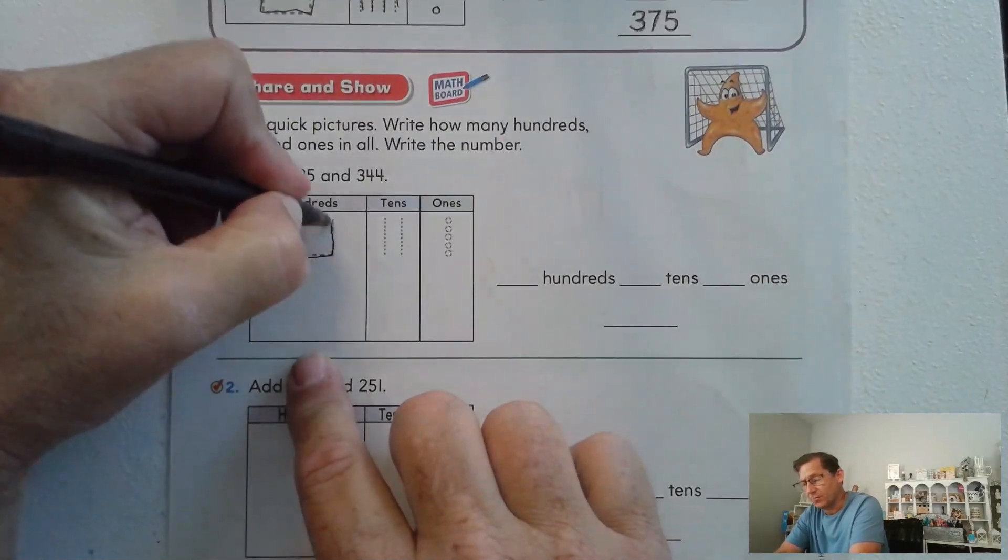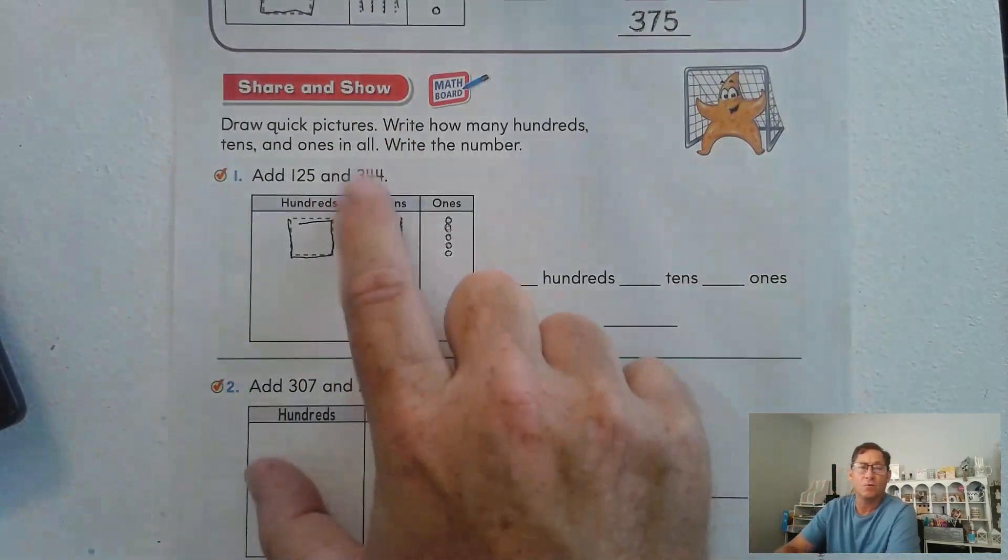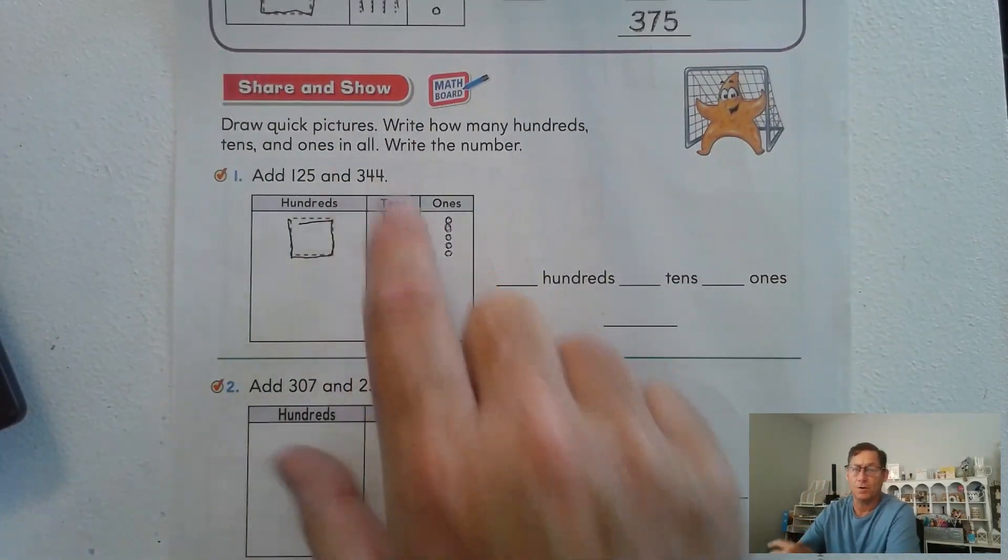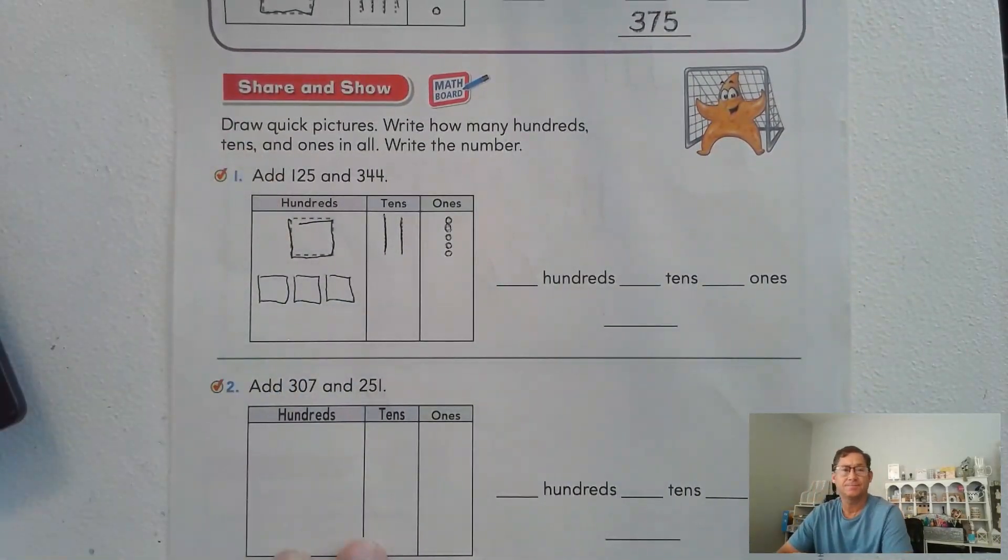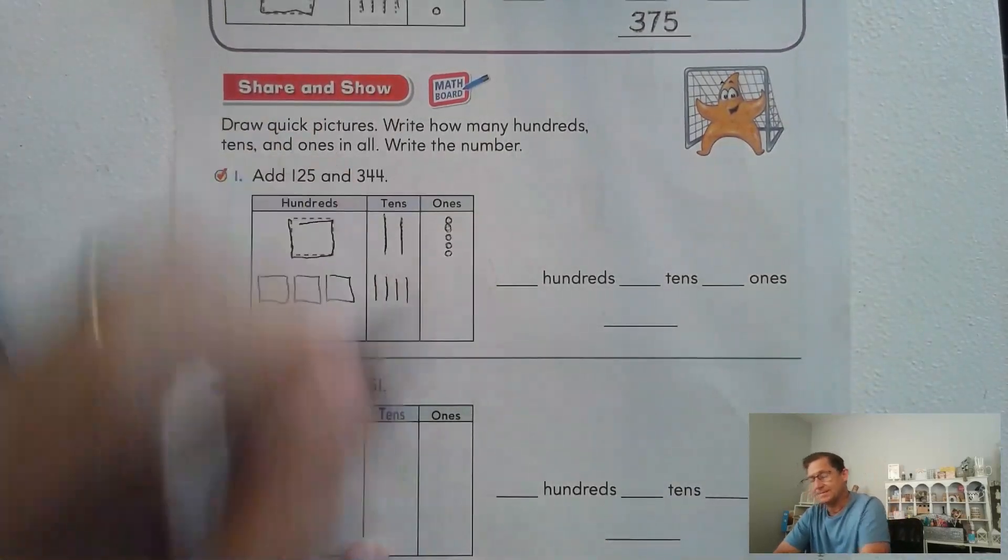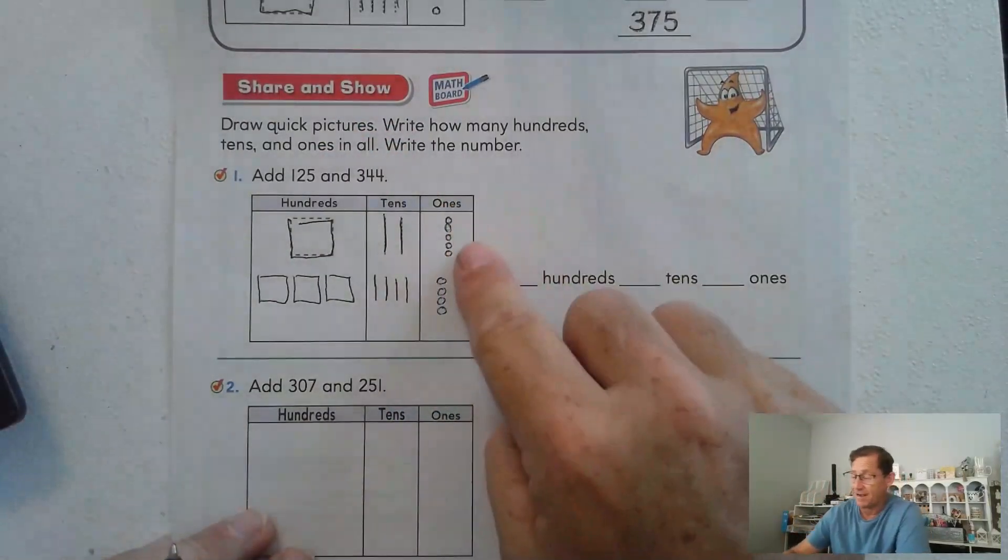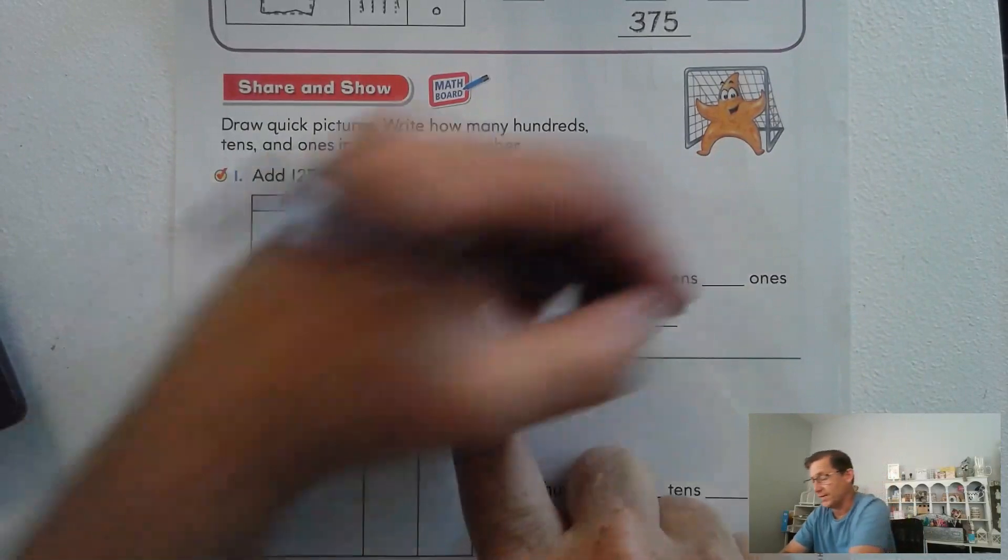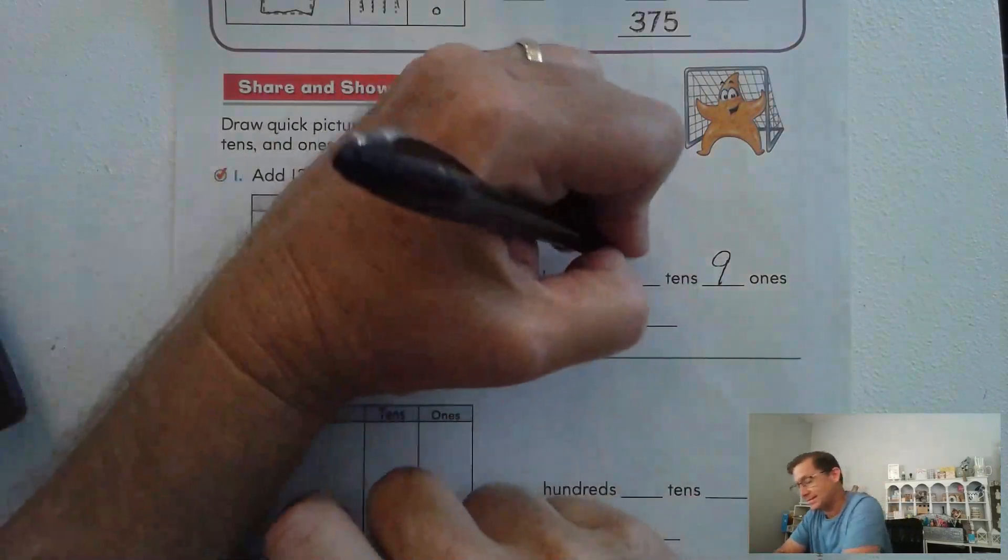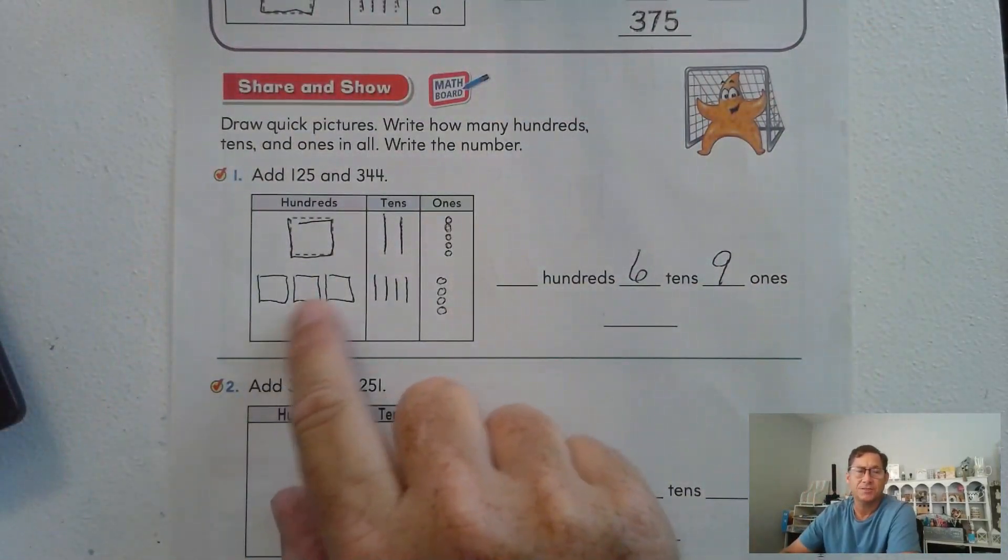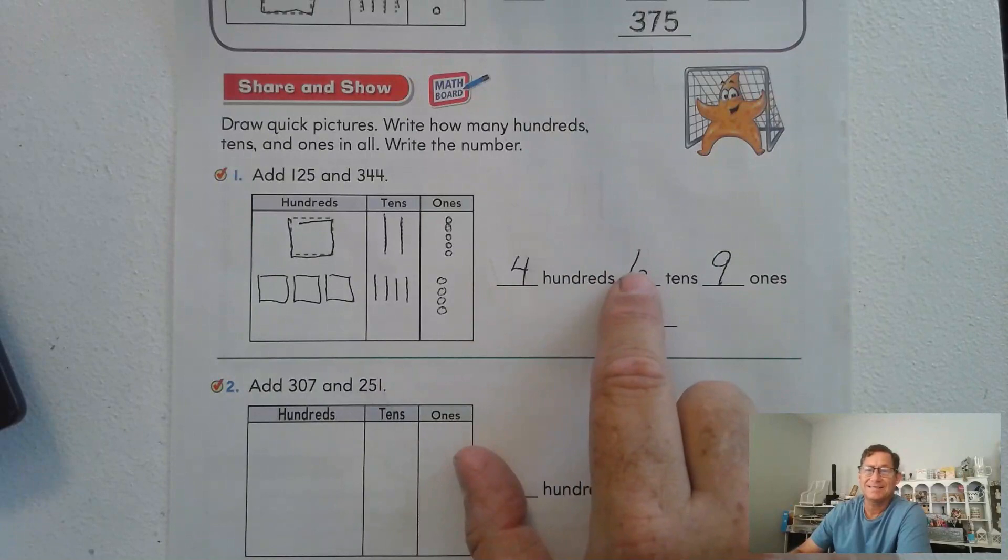125. All right. So they started for us. They have 100, two tens, and five ones. We're going to add 344. So 344 would be three hundreds, four tens, and four ones. All right. How many ones do we have? We have five ones and four more ones would be nine ones. How many tens do we have? We have four tens plus two more tens is six tens. And how many hundreds? 300 plus another hundred, 400. So we have 469.